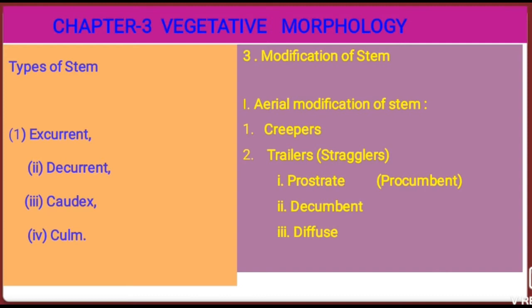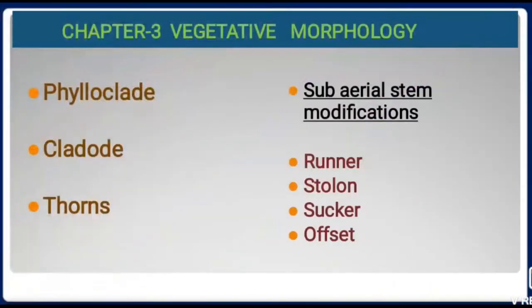Trailers are further classified into three: prostrate, decumbent, and diffuse. Climbers are further classified into six types: root climber, shoot/stem climber, thorn climber, hook climber, tendril climber, and Nepenthes.